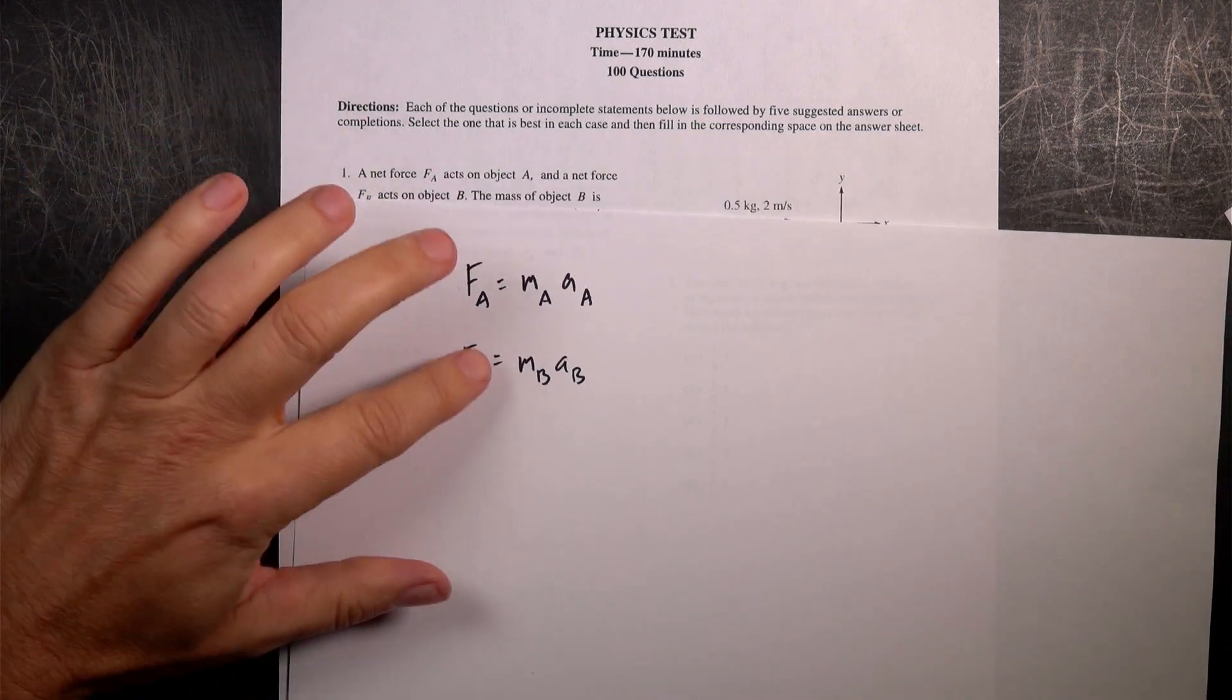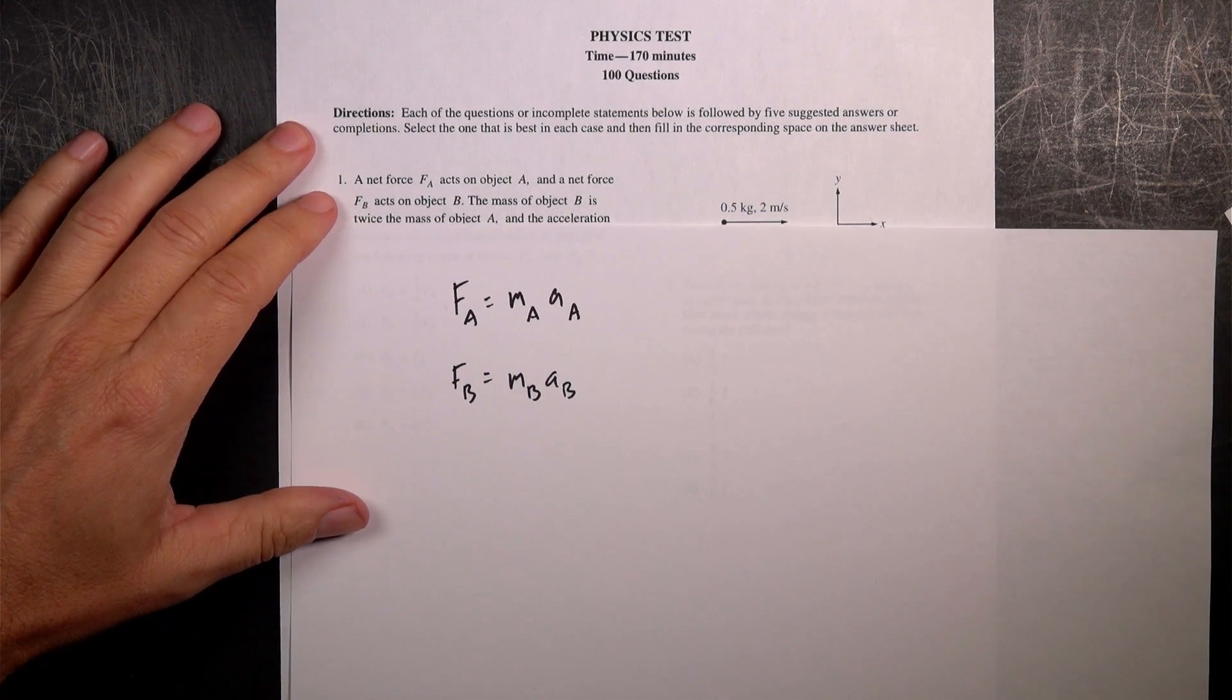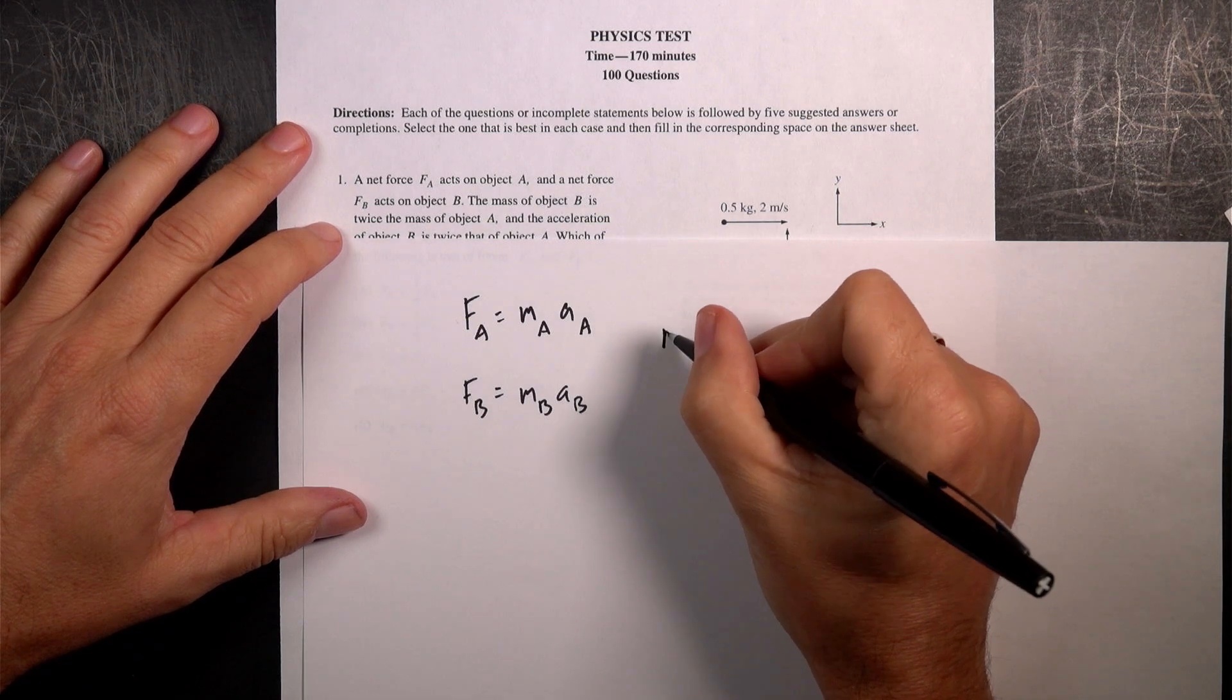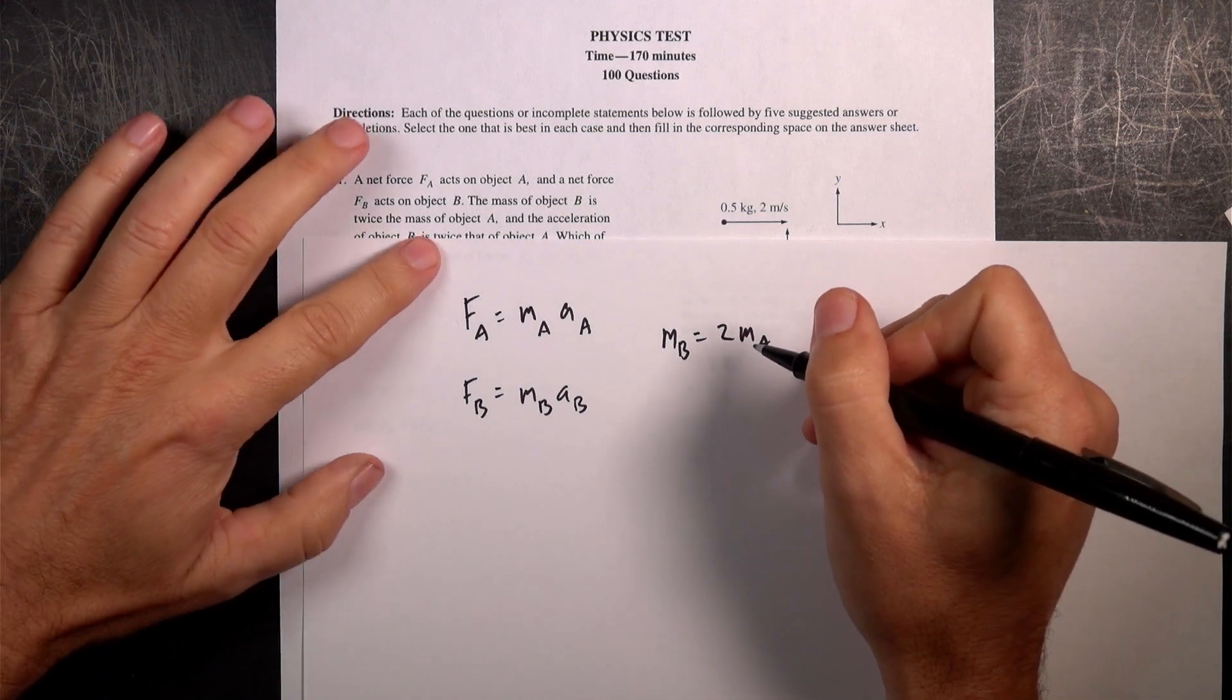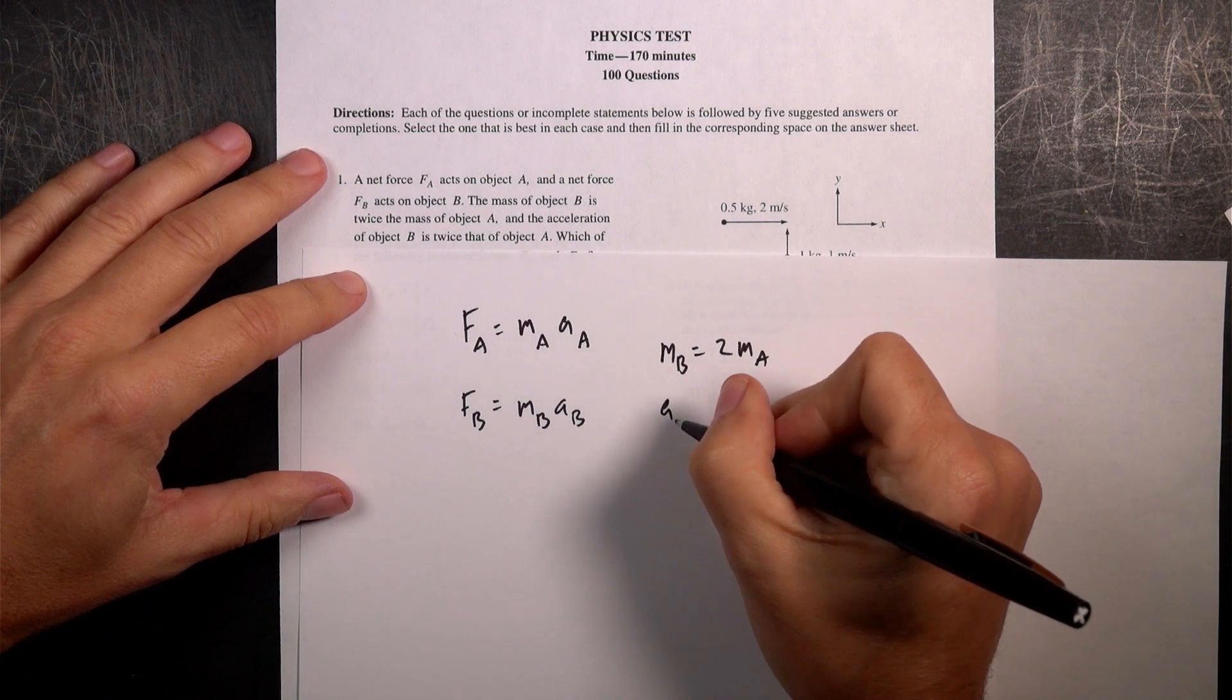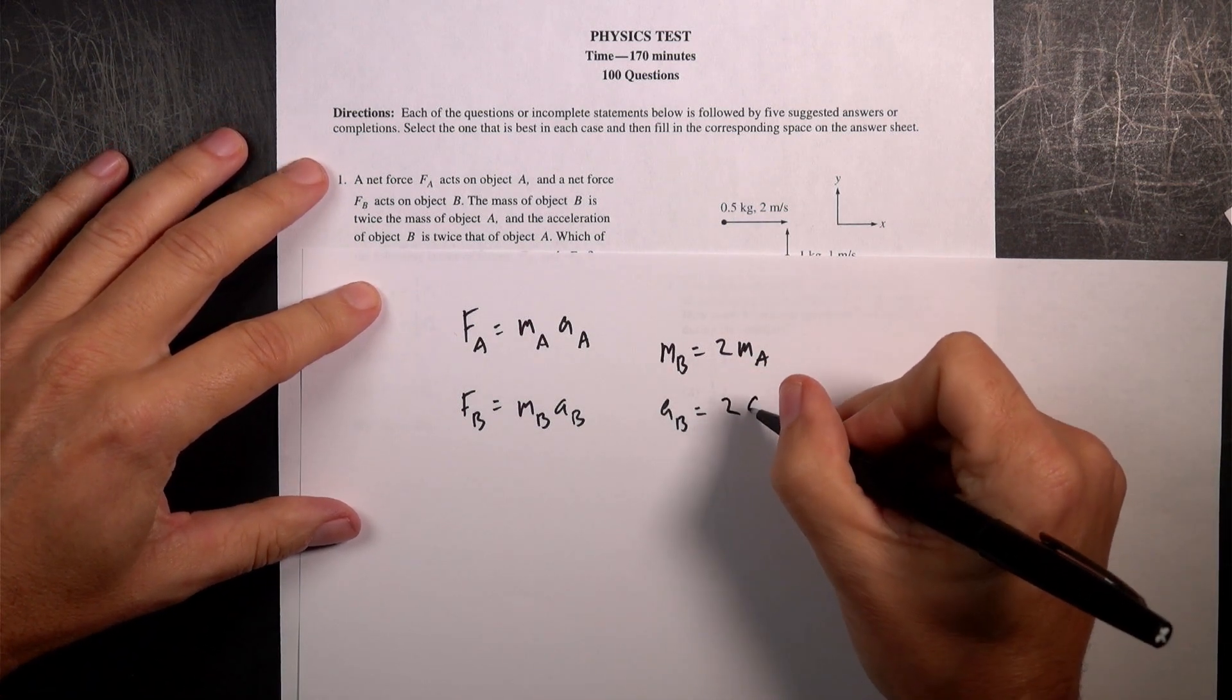Next I know, that's just true for any object. I know that the mass of B is twice the mass of A. So the mass of B is equal to 2 MA. I also know that the acceleration of object B, AB, is equal to twice that of AA.